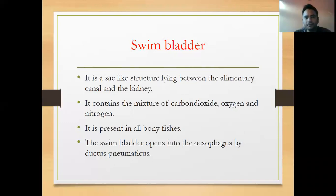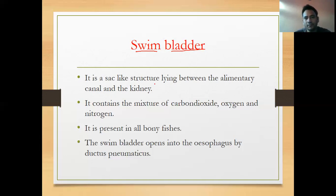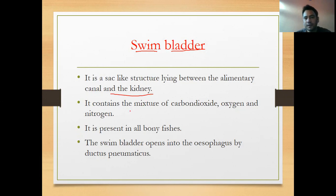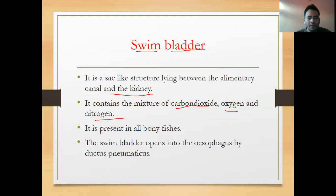The swim bladder in fish is a sac-like structure which helps in swimming. It is a sac-like structure lying between the alimentary canal and the kidney. It contains a mixture of carbon dioxide, oxygen, and nitrogen. The swim bladder is present in all bony fishes.